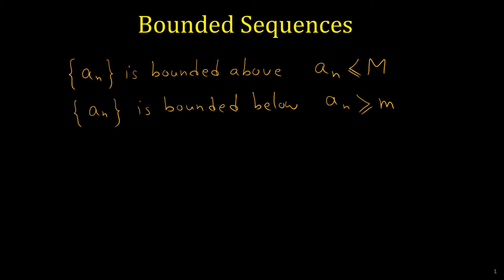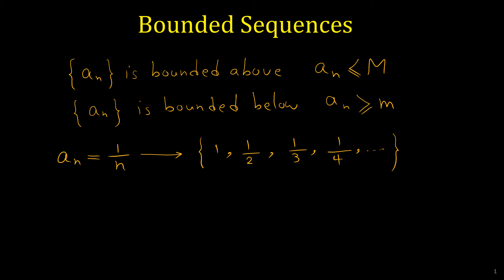Let me show you what I mean by the bounded sequence. For example, consider this sequence: A sub n equals 1 over n. If we list the elements of this sequence, the first element is 1, the second element is 1 over 2, the third element is 1 over 3, the fourth element is 1 over 4, and so on. Looking at the elements of this sequence, it is obvious that all the elements lie between 0 and 1.